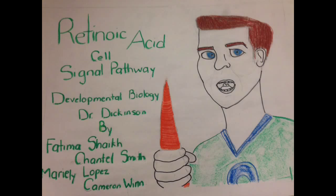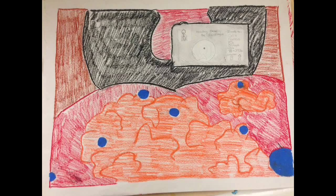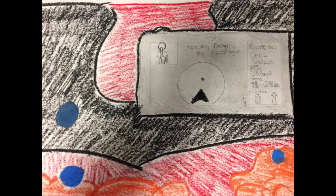Retinoic Acid Cell Signal Pathway — Developmental Biology by Fatima, Chantelle, Marielle, and Cameron. The body does not naturally produce retinoic acid, therefore we must receive it through the consumption of foods like carrots. Now journey with us through the process of converting retinol into retinoic acid and the initiation of transcription.